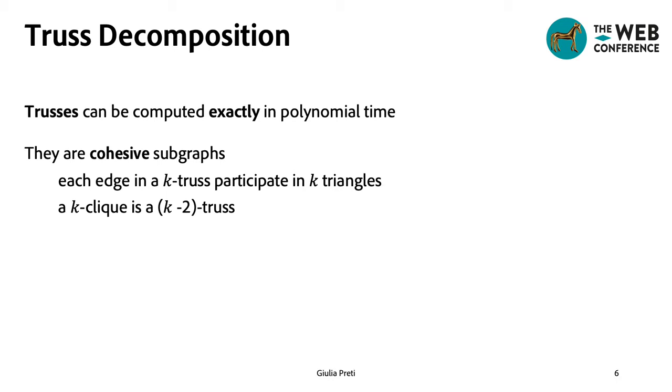A K-truss is defined as a set of edges that form at least K triangles with other edges in the truss. And truss decomposition is the problem of finding all the non-empty trusses of a graph.